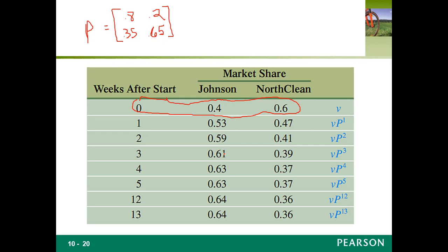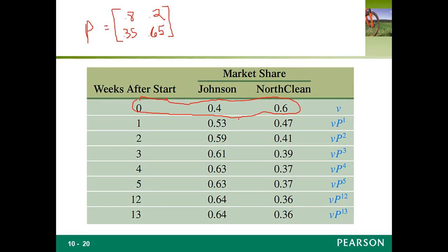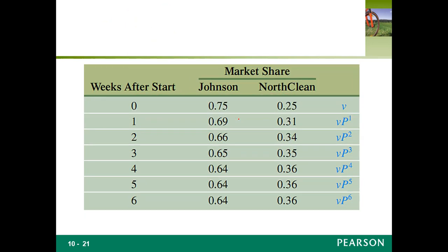It looks like the numbers seem to approach 0.64 and 0.36, as we move on through the weeks. Now suppose that the initial vector 0.75 to 0.25 is used — now it's going down to 0.64, and this is going up to 0.36. The results again seem to be approaching the probability vector 0.64 to 0.36, as before.